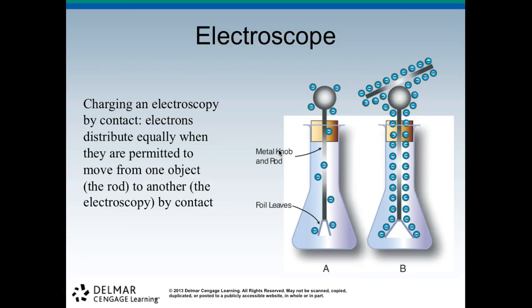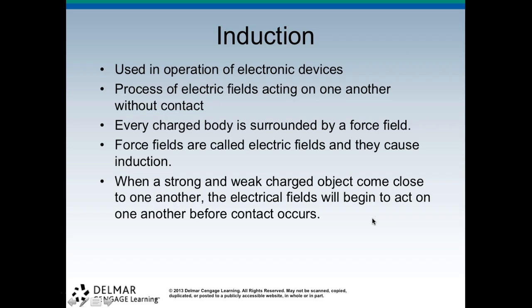An electroscope: charging an electroscope by contact. Electrons distribute evenly when they are permitted to move from one object, the rod, to another. You can see when we add the rod that all the electrons are attracted to the rod and have spaced out evenly. Without the rod they are just randomly attached, and you can see that the foil leaves are pulled away because they are repelling each other. When you attach the rod, they're repelling each other so much that it flares out the foil leaf.